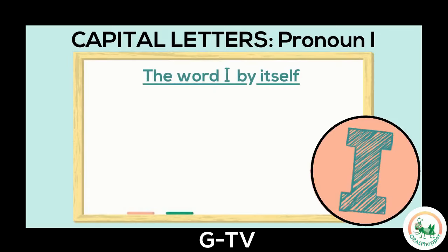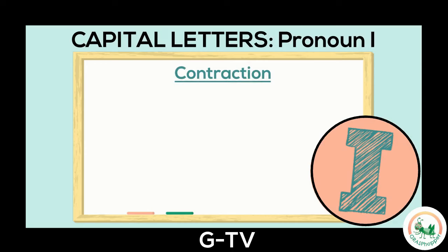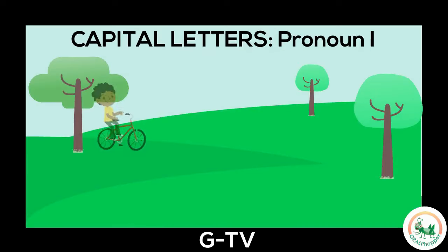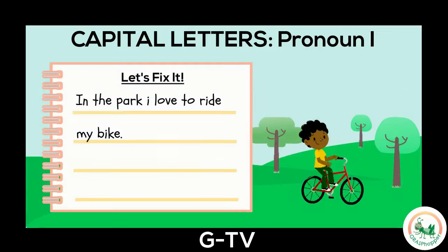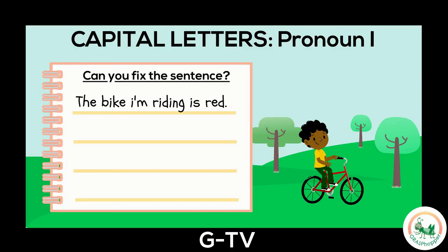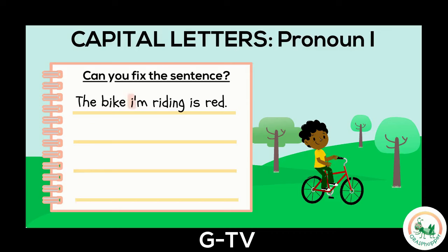Rule number four: writing a capital when using the pronoun I. We write a capital I when the I is by itself in a sentence — this lets the reader know the sentence is about you. We also need a capital letter in the contraction I'm, when we combine I and am into one word. Here's a sentence about a day in the park: In the park, I love to ride my bike. The word I is by itself, so it needs to be a capital letter. Can you fix this sentence? The bike I'm riding is red. Did you make the I in the contraction a capital letter? Nice work finding the capital for the pronoun I.